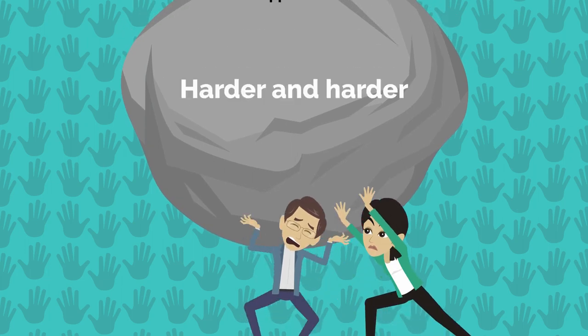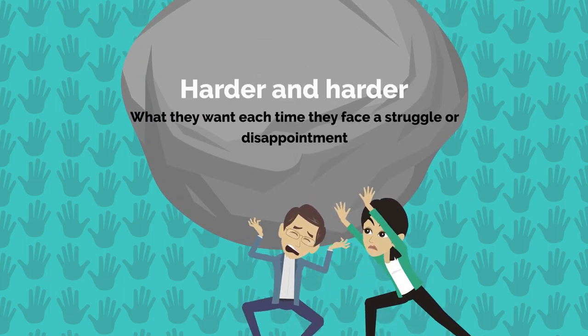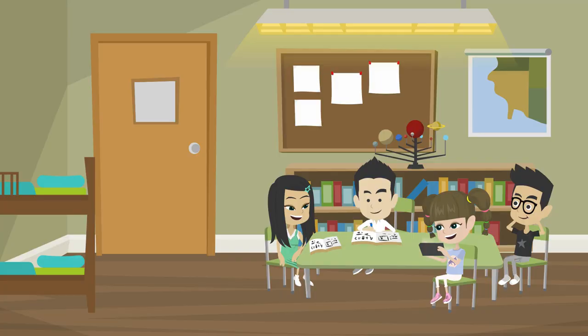you will find it harder and harder to deny your children what they want each time they face a struggle or disappointment. The best way to help your children learn to delay gratification is to model self-denial yourself.